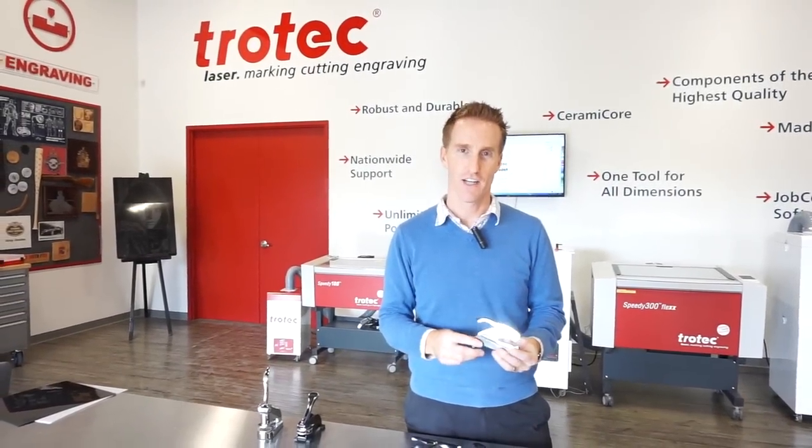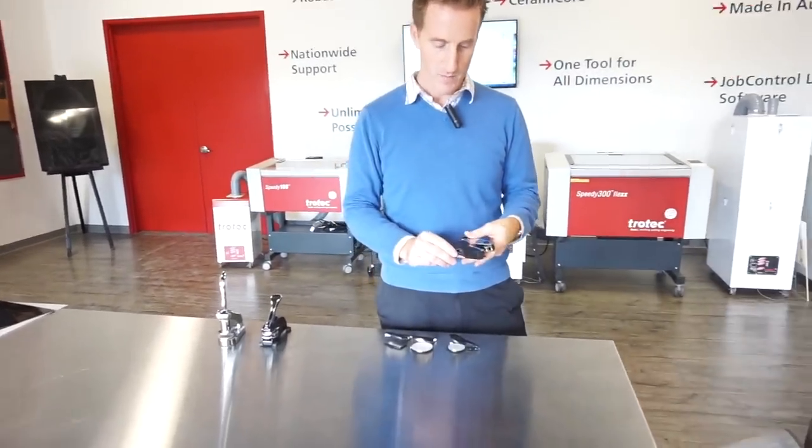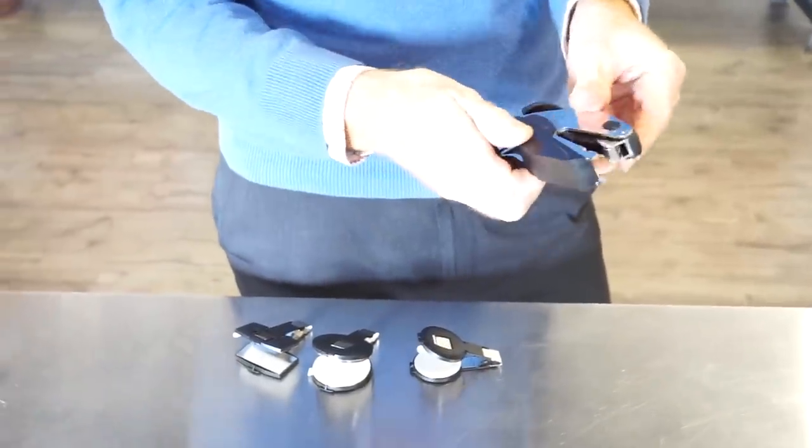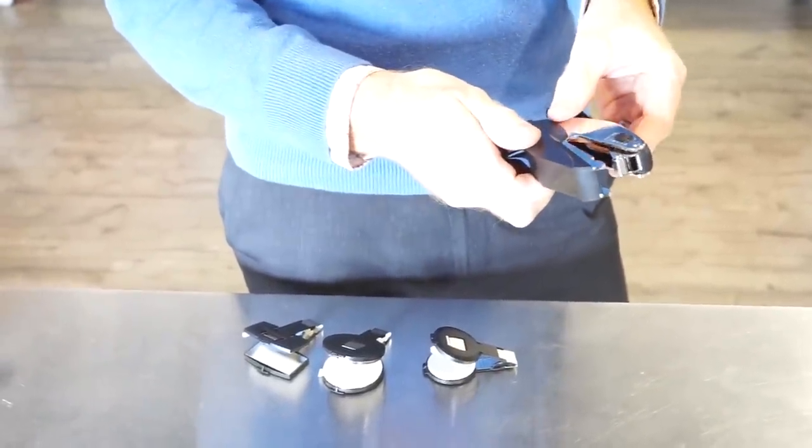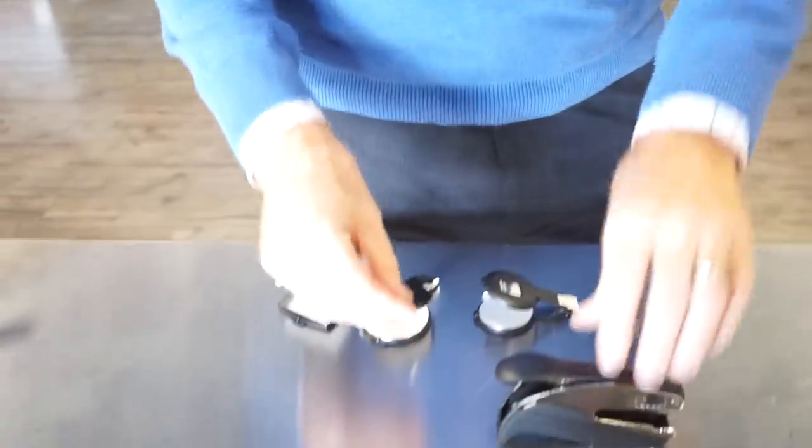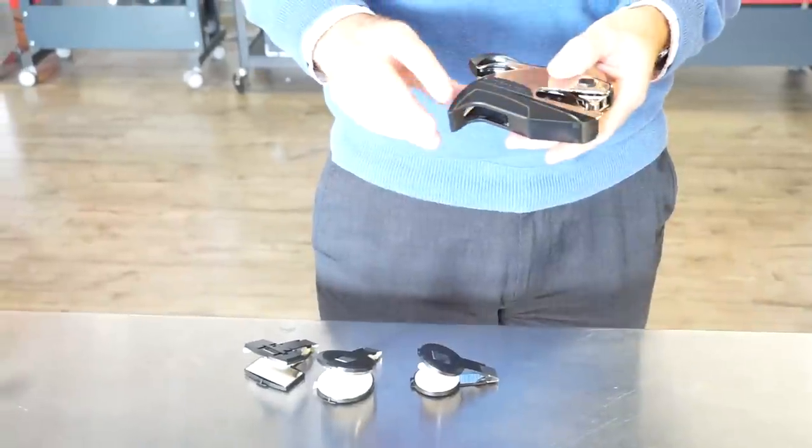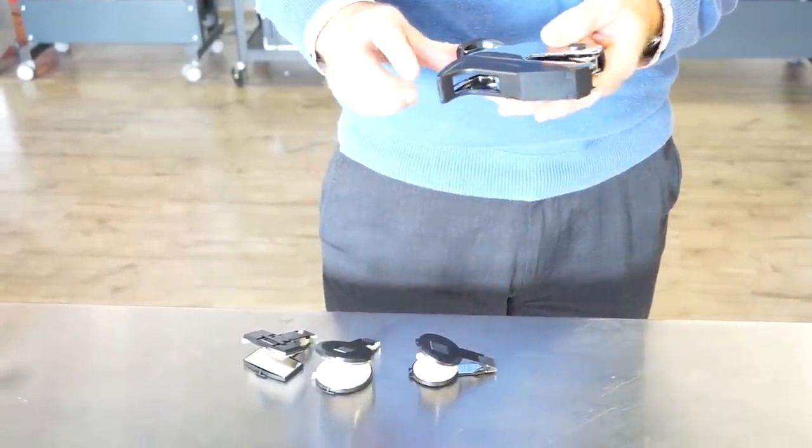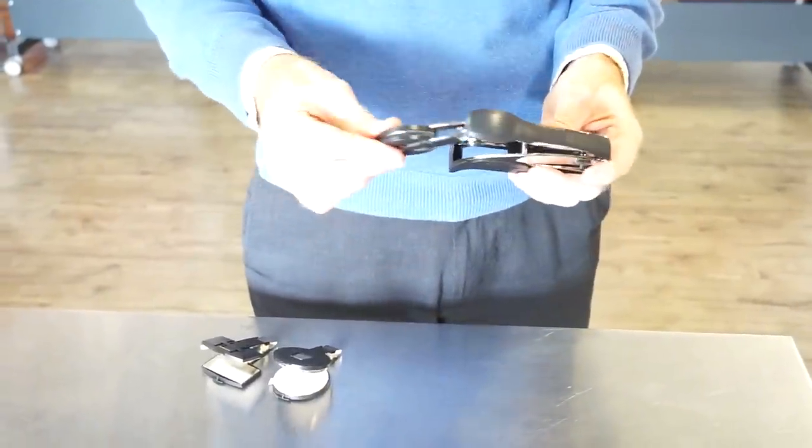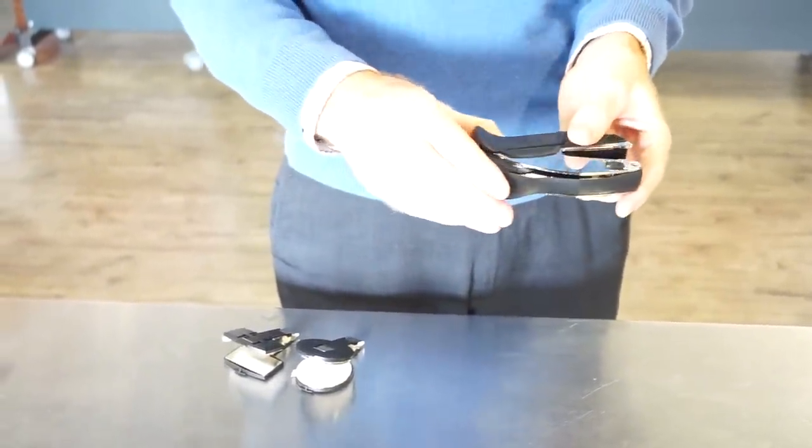Let's go over the features of the TroDat Ideal Seal. One of them is a locking feature which prevents the mechanism from opening up on you. A really great thing about this seal that's been redesigned is that it works as a desk seal as you see. There's nothing in the way and it also works as a pocket seal. The die holder fits conveniently right in the back of it for easy storage as well.